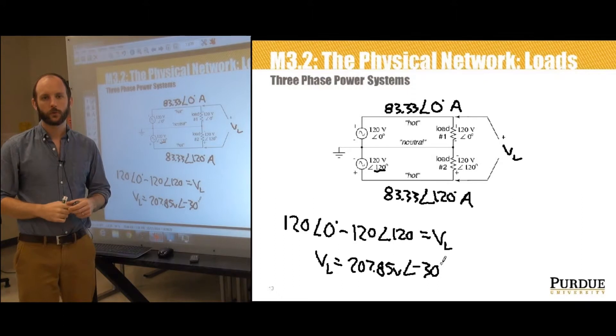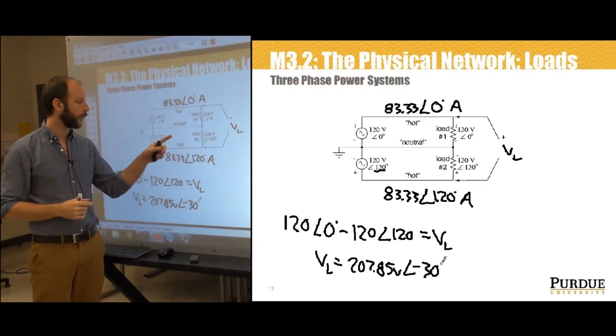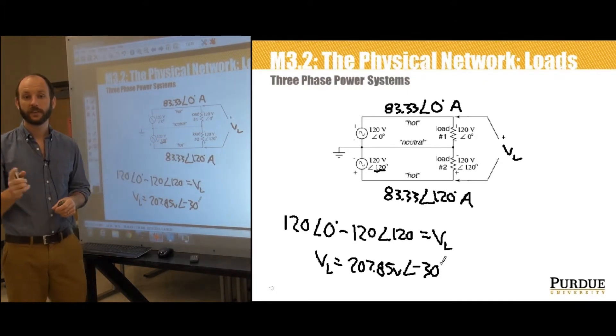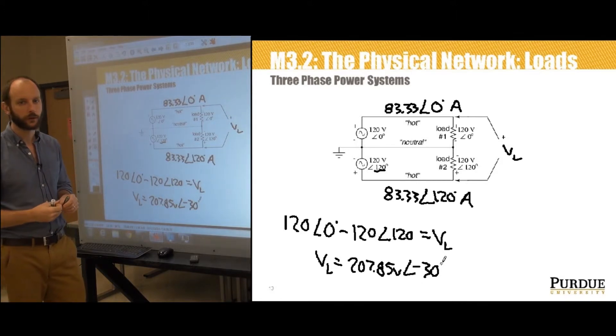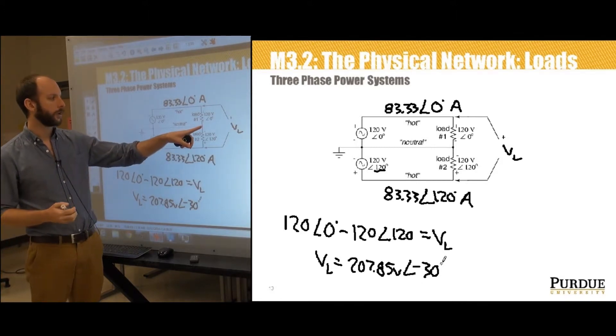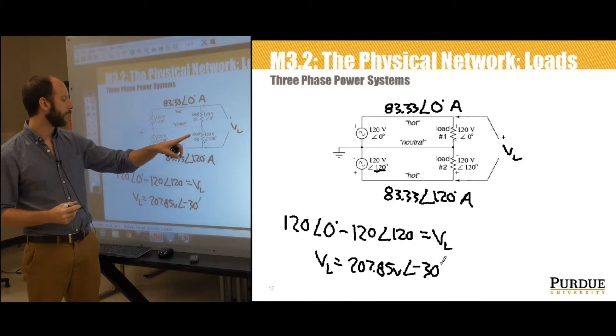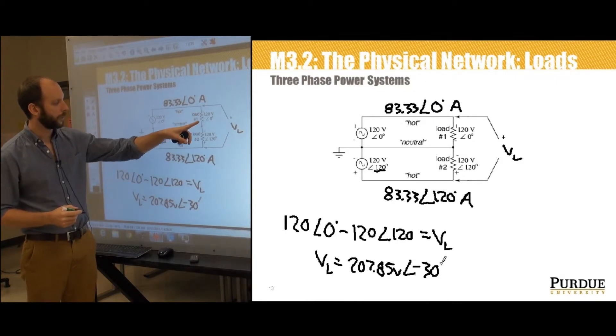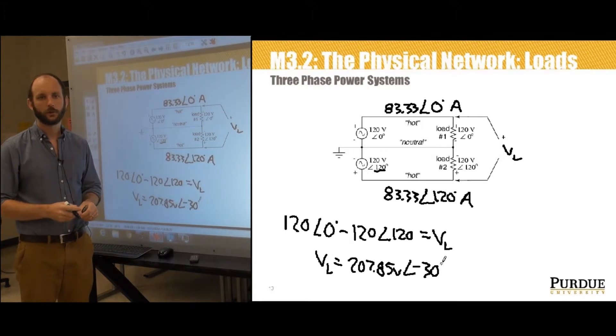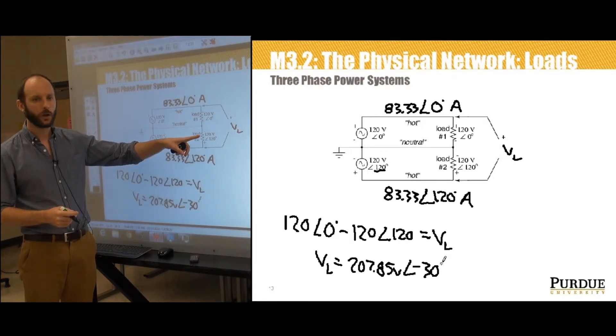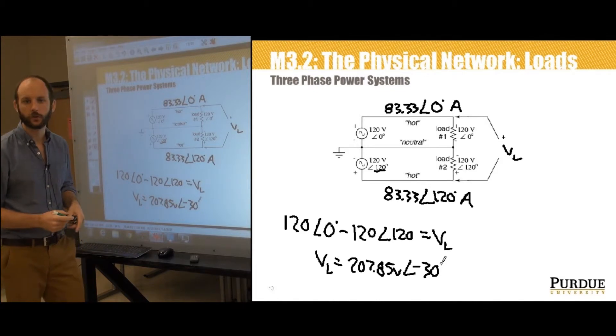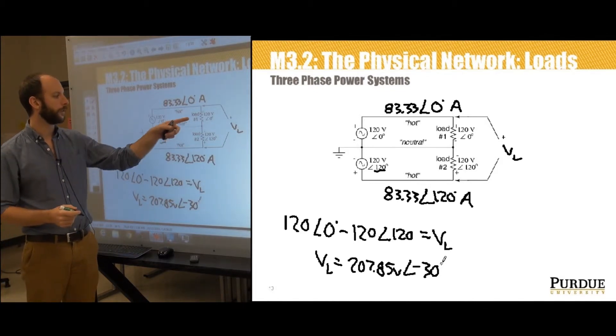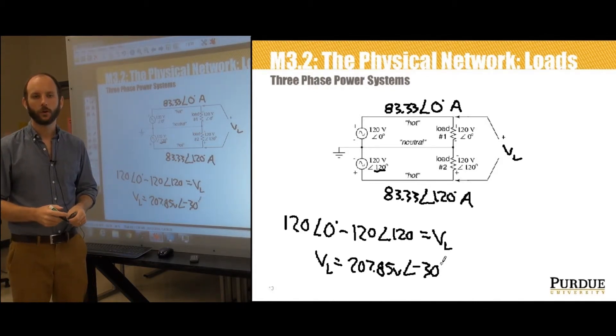We can also use Kirchhoff's current law to determine the current flowing in this neutral wire. And this is actually what gives us some surprising results. Now, if we were to sum the current flowing here, we would see that there's current flowing out, there's current flowing in, there's current flowing in. So we say I load one plus I load two plus I neutral is equal to zero amps. The sums of all these currents flowing into this node are zero.